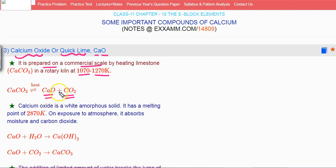When calcium oxide is produced, it is a white amorphous solid with a melting point of around 2870 Kelvin. If you expose it to atmosphere, it will absorb moisture and react with CO2.